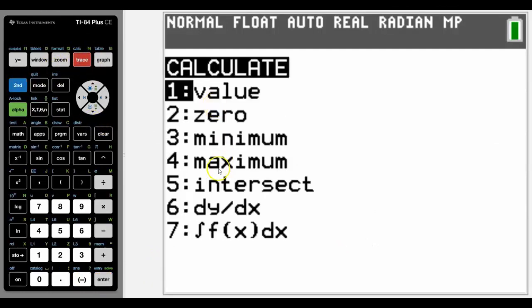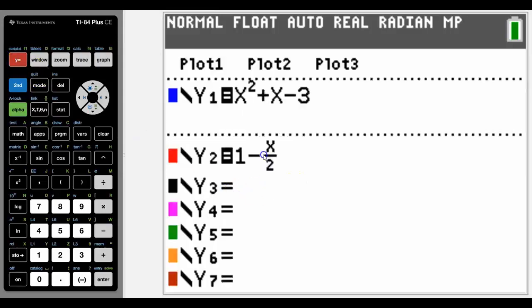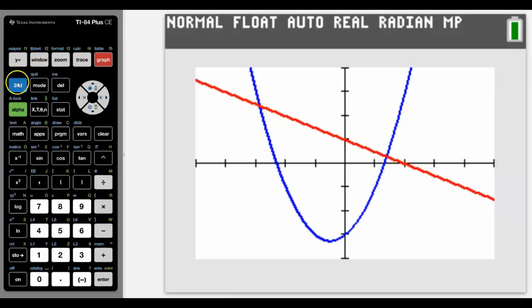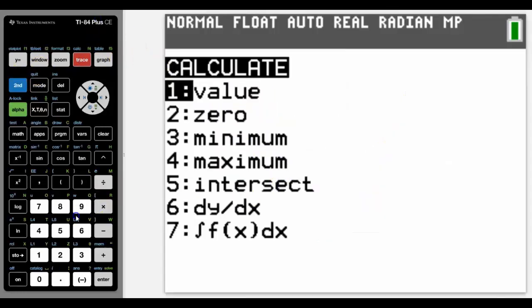We're going to finish with looking at intersect, but for us to do that we need another graph, and in this case I've typed in a linear graph 1 minus x on 2 which will look something like that. And if we're trying to find where the intersect, we can see that it intersects in two places. So let's see what happens when we go to calc intersect.